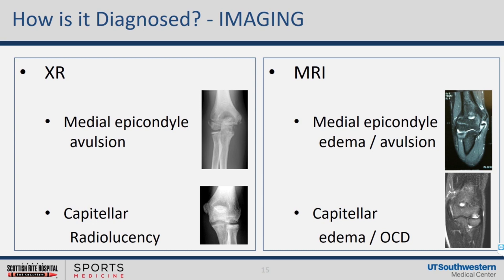Beyond the physical exam, history and exam often make this pretty clear — asking about elbow movement and mechanical symptoms. Sometimes imaging is warranted. We see medial epicondylar avulsive changes on X-ray, and capitellar radiolucency with OCDs. For advanced imaging, we can use ultrasound for quite a bit of this, but the gold standard remains MRI to see not only the ligamentous structures but also the avulsive changes that can occur.